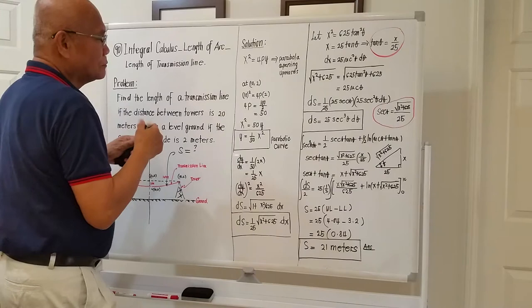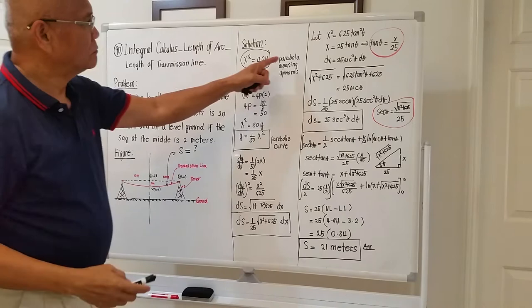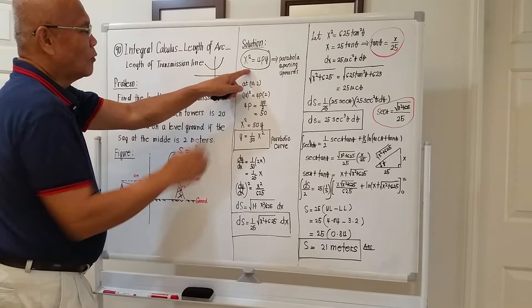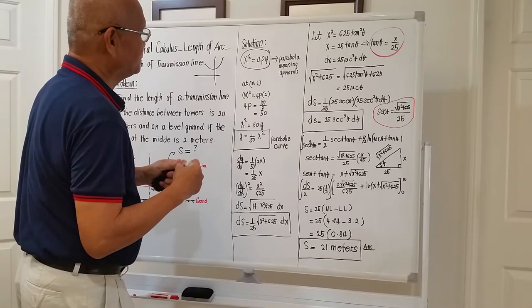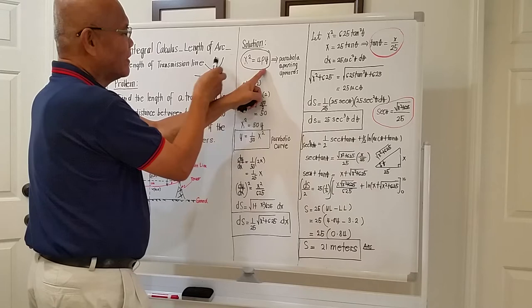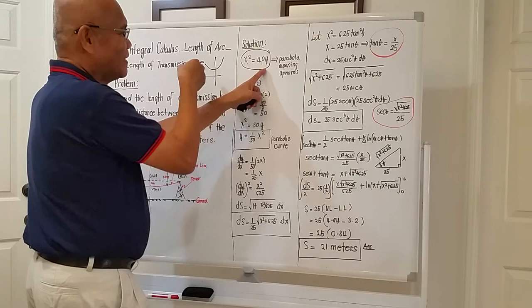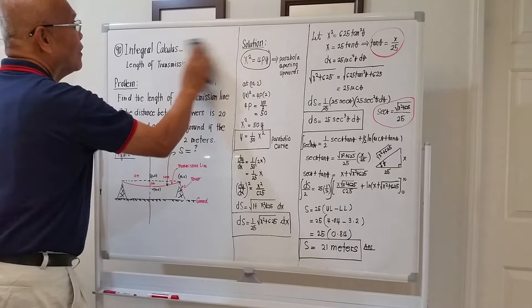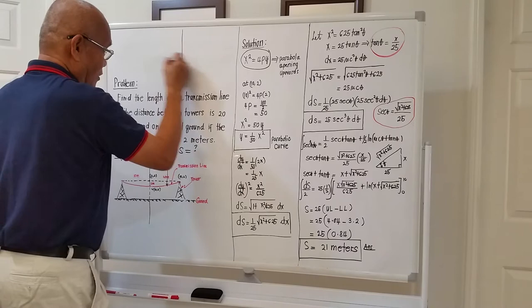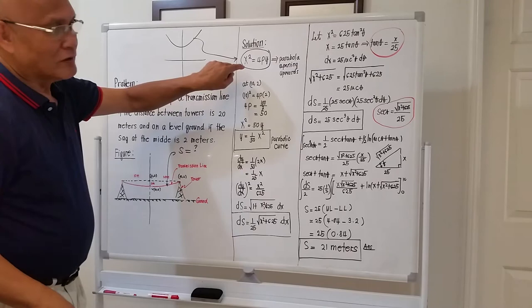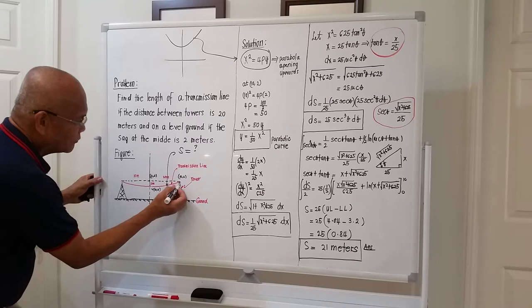Solution. The equation is x² = 4py — that is a parabola opening upwards. Why x squared? Because if you compute for the value of x given y, x will satisfy a quadratic equation, so the parabola opens upward. This graph matches the configuration of the transmission line. To compute for the length of the transmission line, we work with this equation.